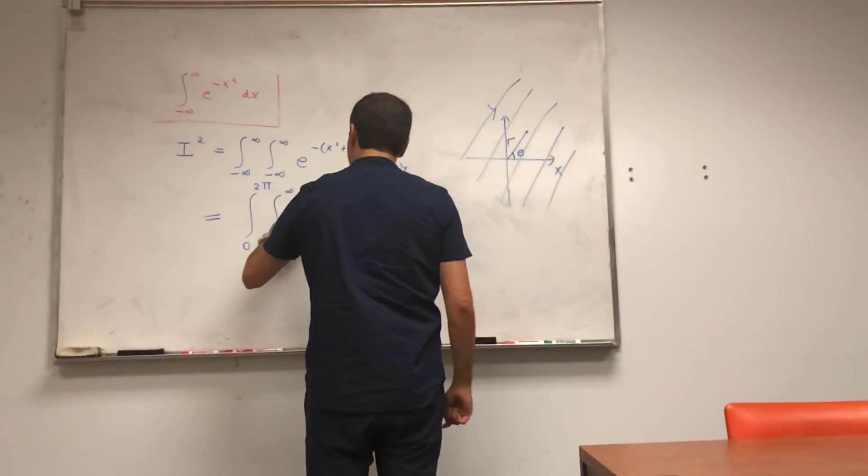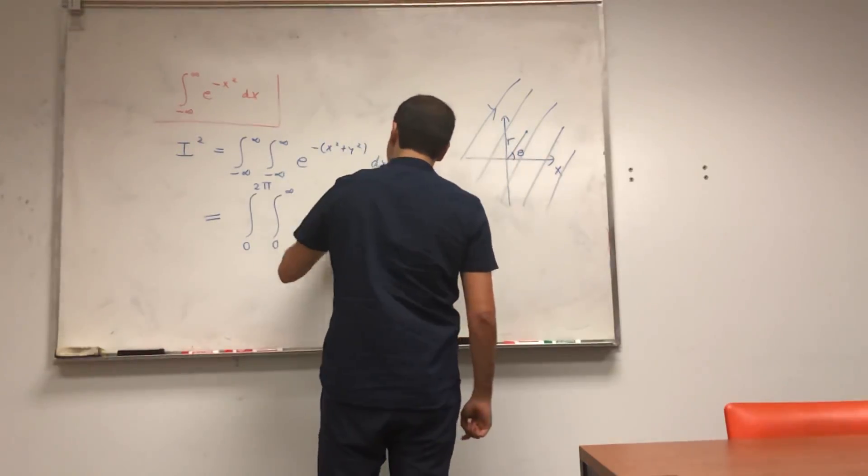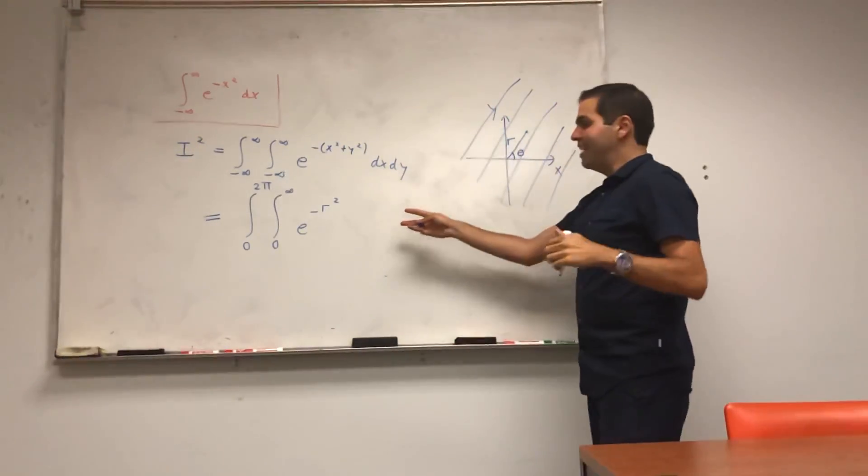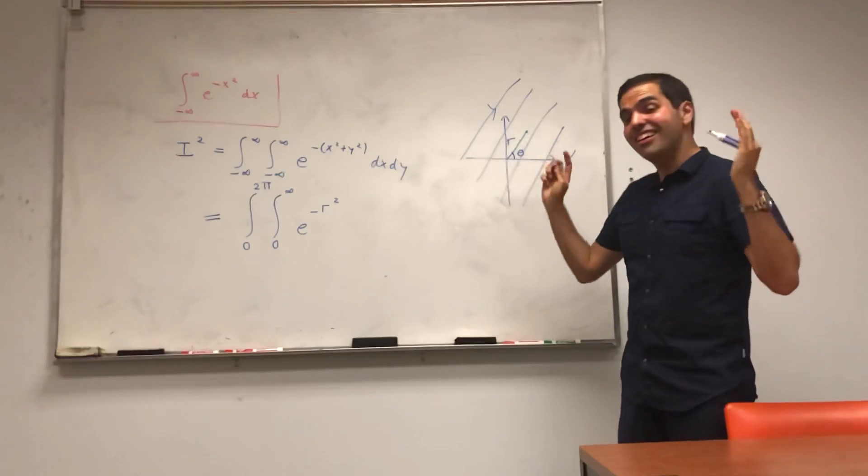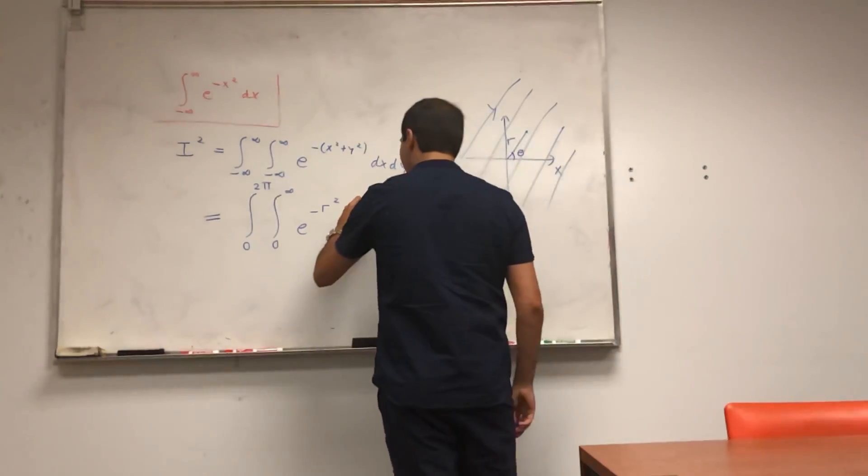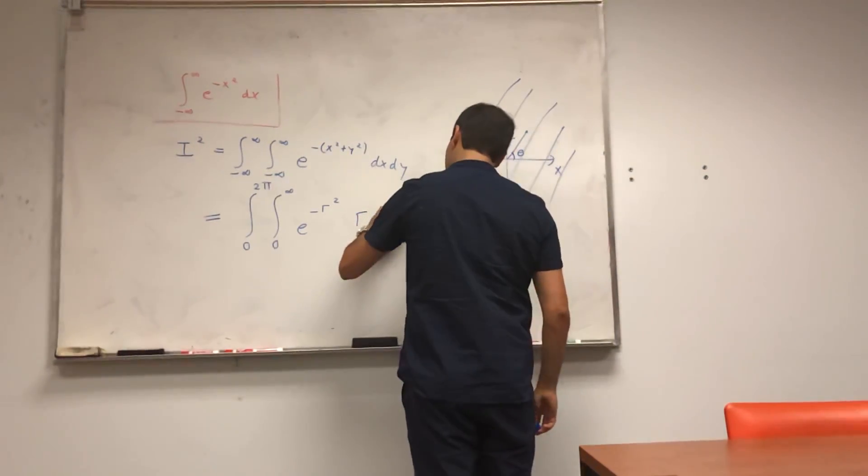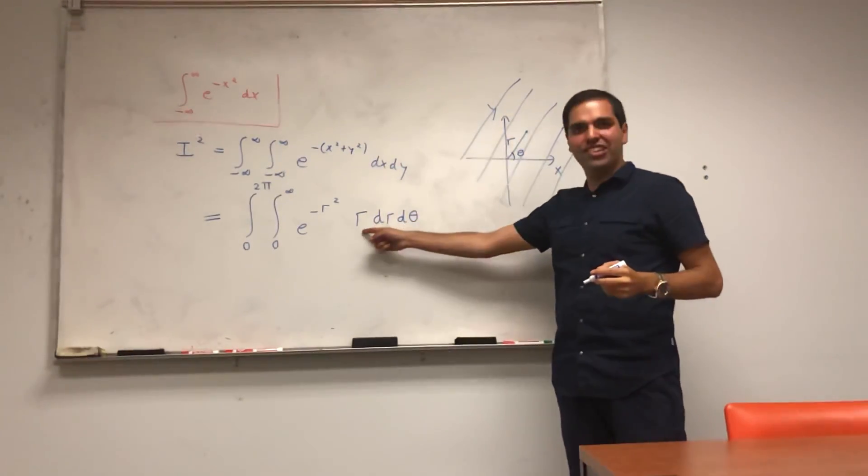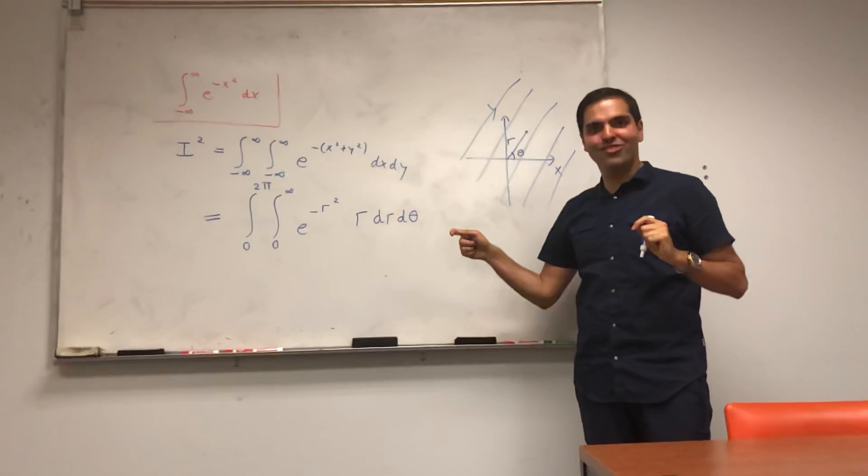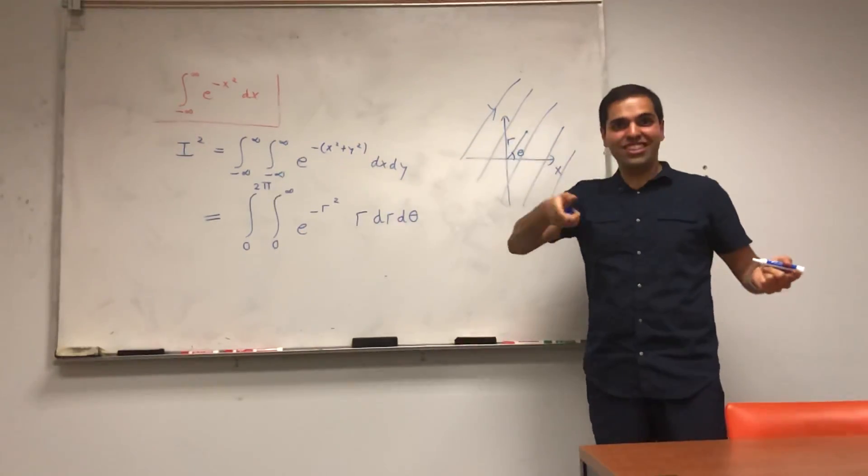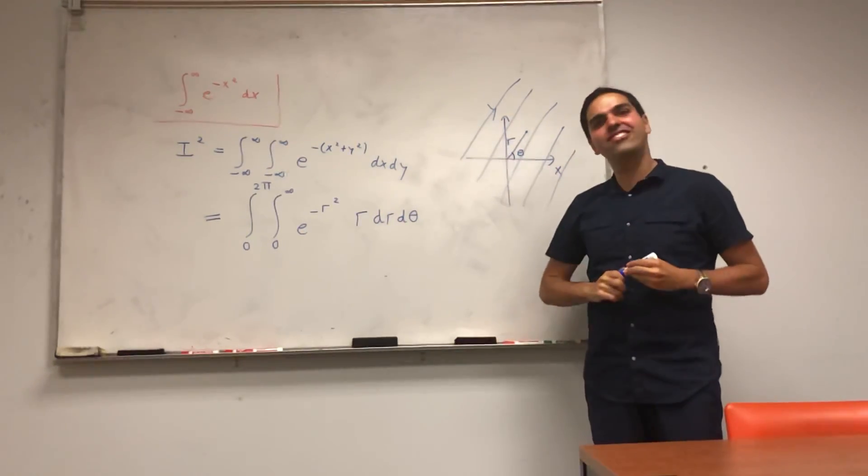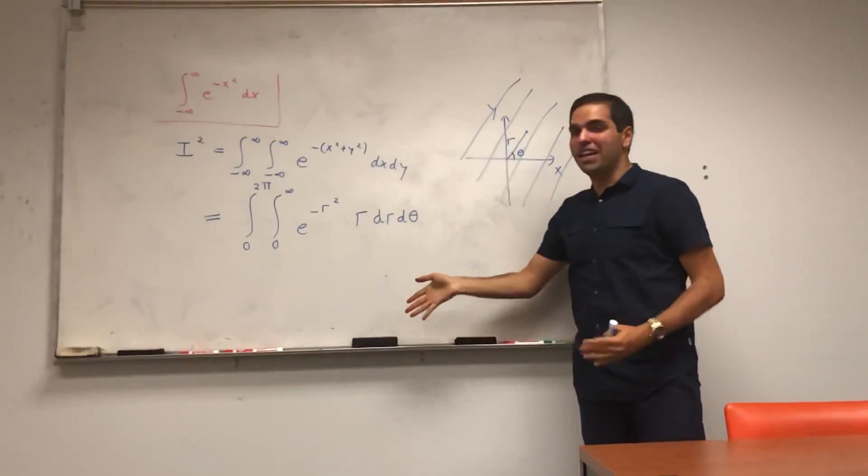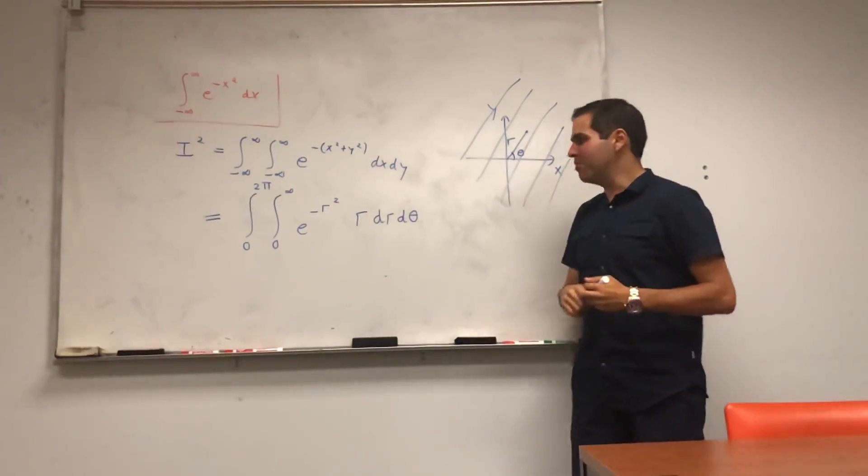And you're left with e^(-r²). And there's some other junk, which is r dr dθ. And in case you're curious where this r comes from, make sure to check out one of my other videos on my channel where I explain where this comes from. It's from a Jacobian.